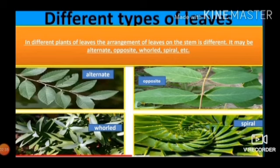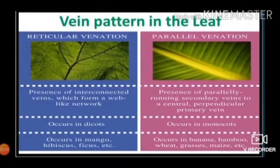Different types of arrangement of leaves on the stem include alternate, opposite, whorled, and spiral. Alternate means leaves arise one after the other in ascending order. Opposite means the leaves are arranged in opposite directions. Whorled means the leaves are arranged in a twisted manner, and spiral means the leaves appear rounded from the center.